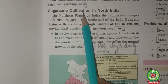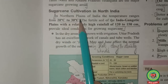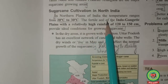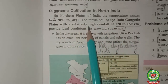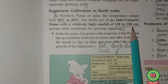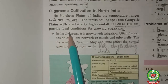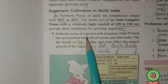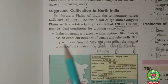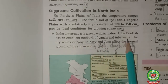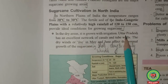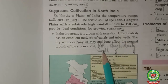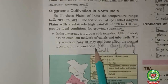In northern plains of India, temperature ranges from 20°C to 30°C. The fertile soil of the Indo-Gangetic plains with relatively high rainfall of 120 to 150 cm provides ideal conditions for growing sugarcane. In dry areas it is grown with irrigation. Uttar Pradesh has an excellent network of canals and tube wells, making it the largest producer. The dry winds — loo, hot dry and dusty winds — blowing in May and June affect the normal growth of sugarcane.